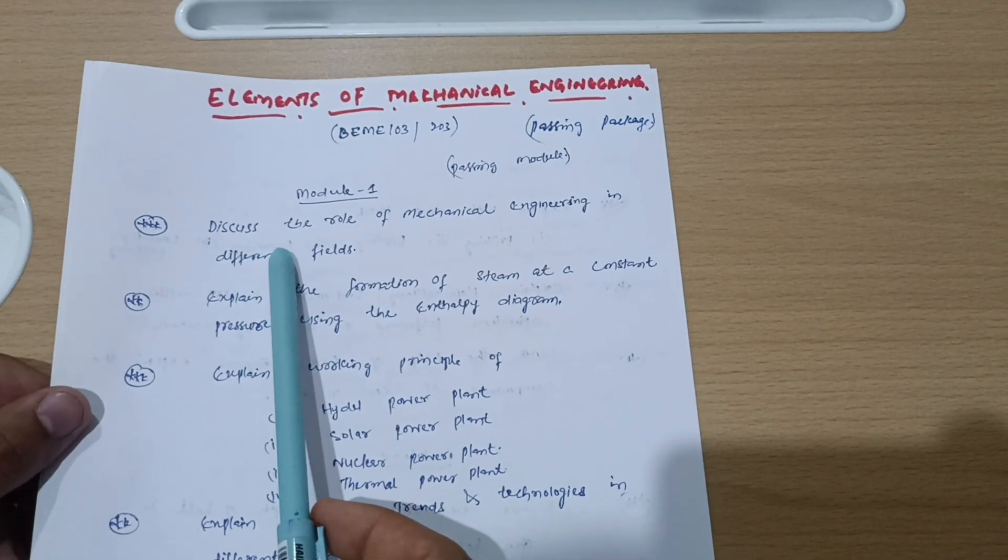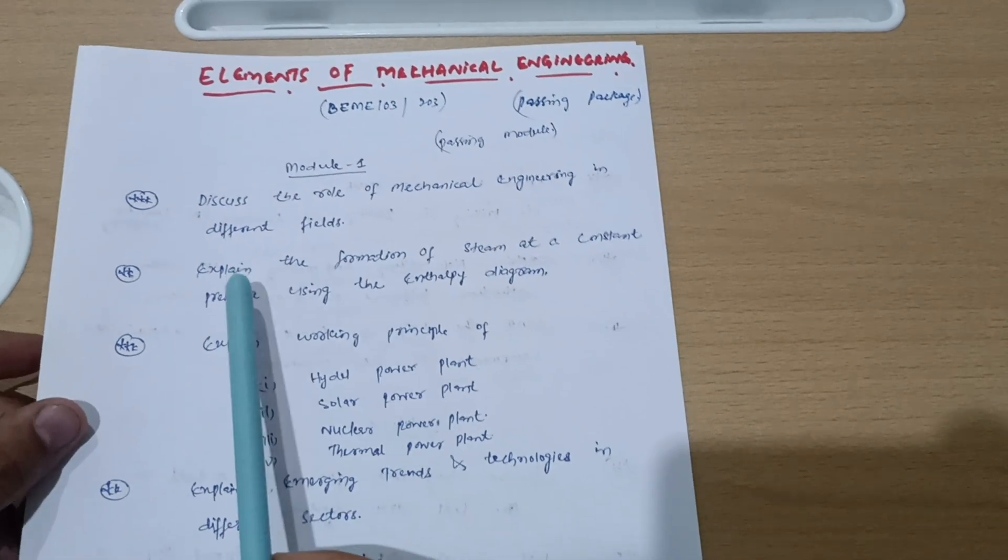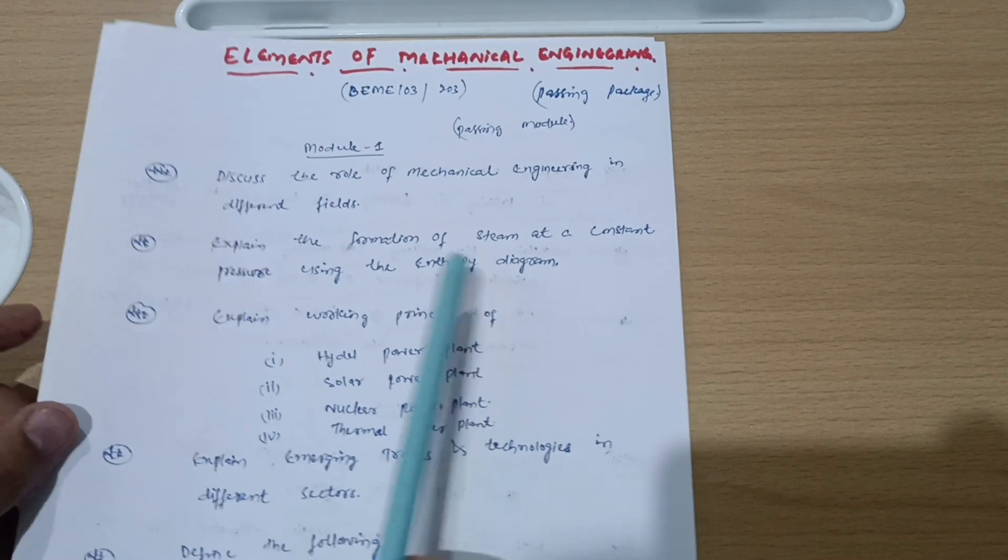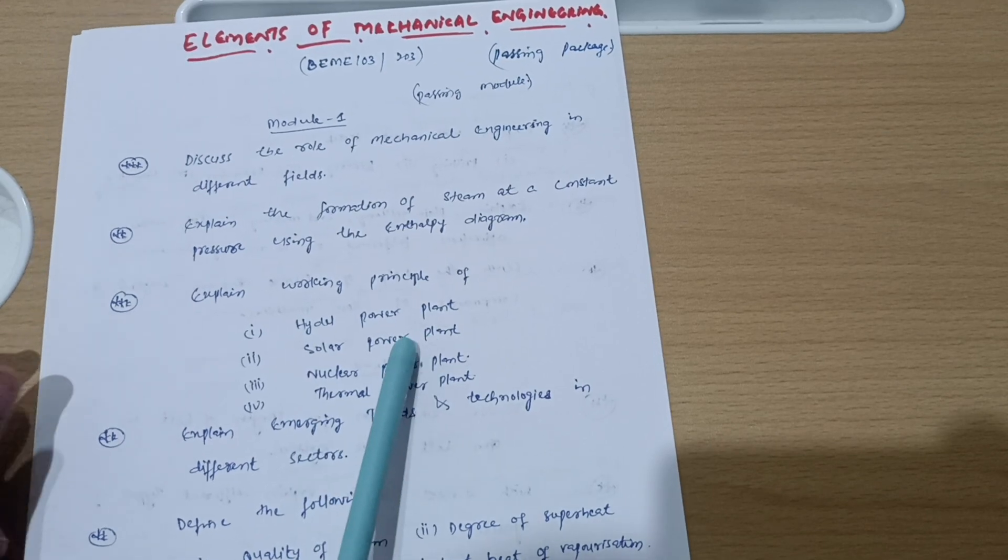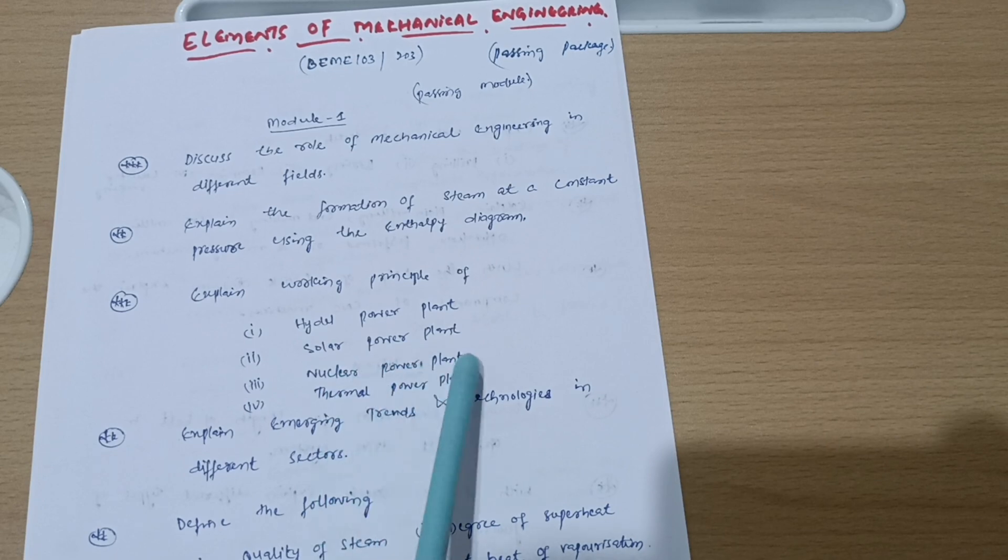In Module 1, you have to cover five questions: discuss the role of mechanical engineering in different fields, explain the formation of steam at constant pressure using the enthalpy diagram, and explain working principle. Out of these four they may ask you any two: working principle of hydral power plant, solar power plant, nuclear power plant, and thermal power plant.